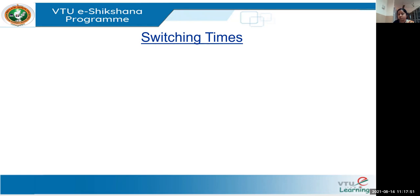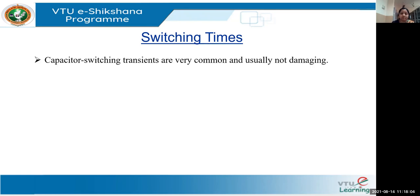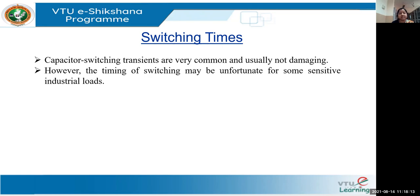The question comes: how can utilities deal with such problems related to capacitor switching? This is very common but not very dangerous to equipment; however, it needs to be addressed because unwanted trippings may happen, especially for very sensitive loads. Based on historical data, if we are aware of at what time the switching will take place, certain industries can take advance steps to address it. Capacitor switching transients are very common and usually not damaging; however, the timing of switching may be unfortunate for some sensitive industrial loads, and if you know when a transient will happen, you can have protective devices in place to limit those surges.